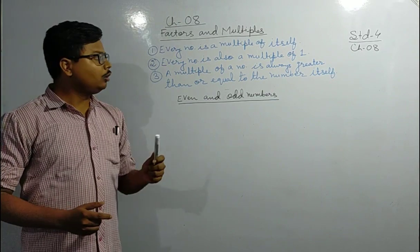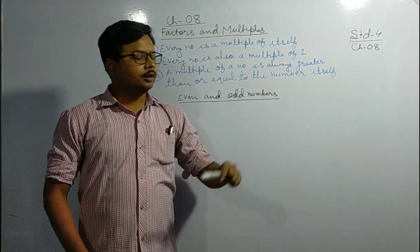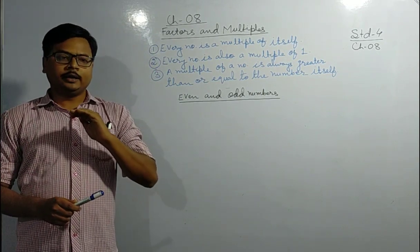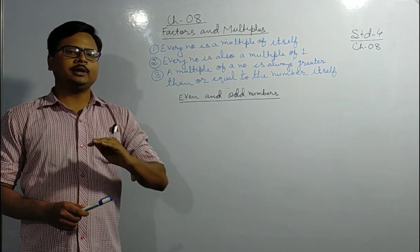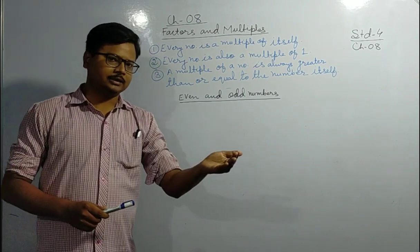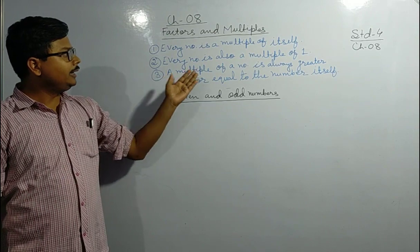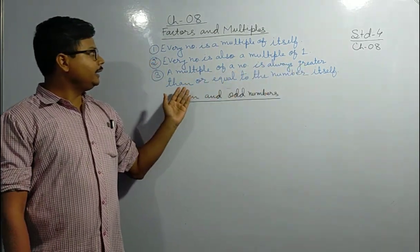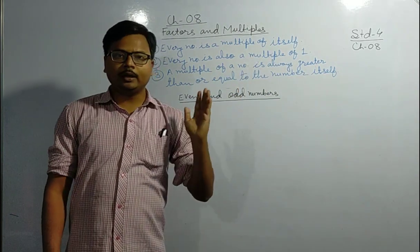Rule number two: every number is also a multiple of one. As you all know, in the multiples of one, every number comes — for example, one times four is four, one times eight is eight. Now, rule number three: a multiple of a number is always greater than or equal to the number itself.